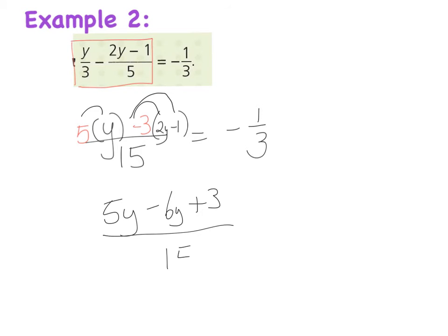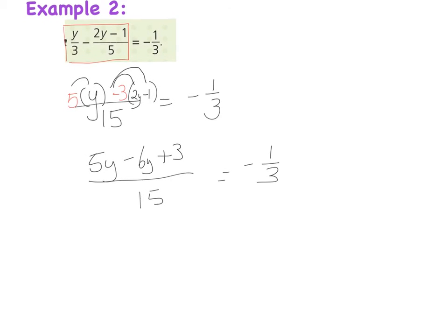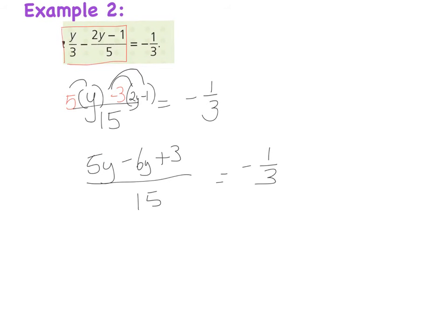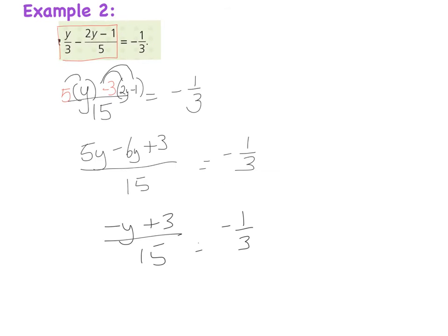Then minus 3 times 2y is minus 6y, and minus 3 times minus 1 is plus 3, all over 15, equals minus one third. Grouping: 5y minus 6y is minus y, plus 3, so I have (minus y + 3) over 15 equals minus 1 over 3.